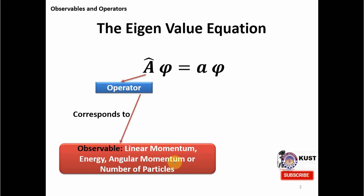Please note that there is no mention of mass or time in this list. The reason is that we do not quantize all kinds of observables. If we quantize them — for example, if we quantize time — it will produce some weird kind of results which will not match with our daily life observations about physical systems.